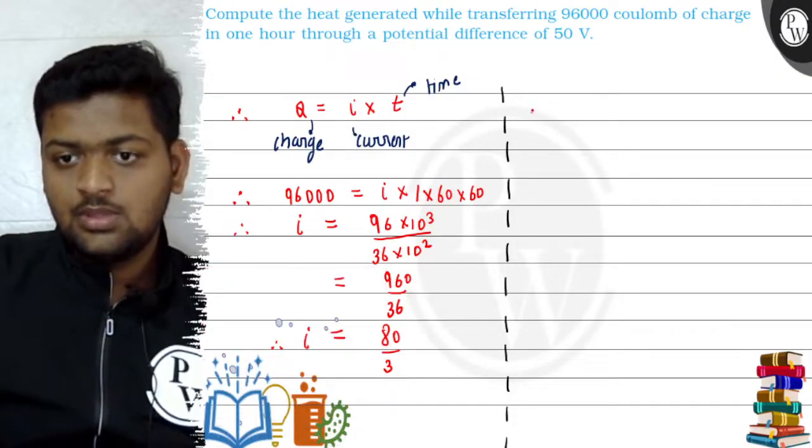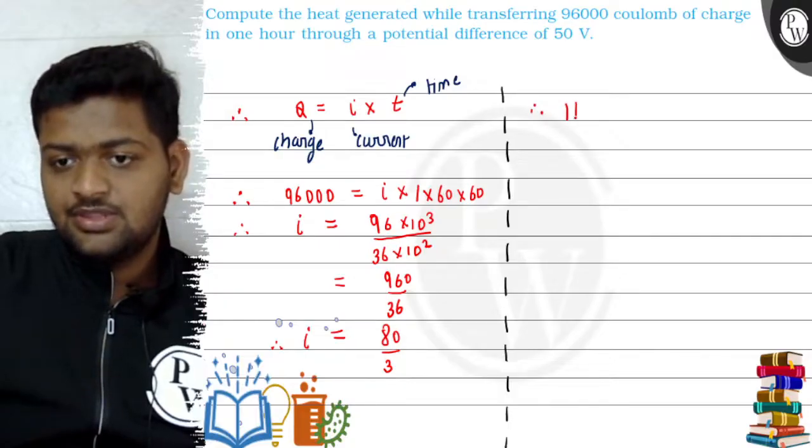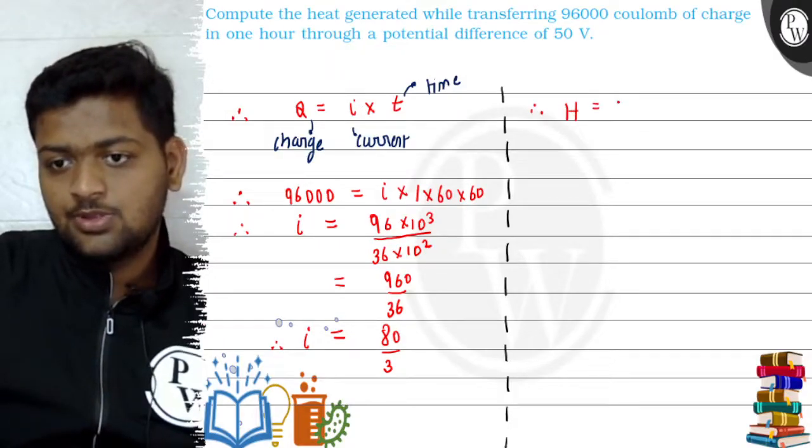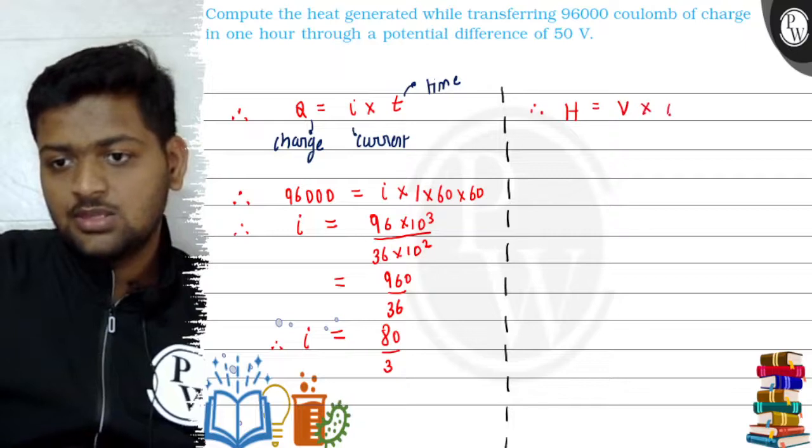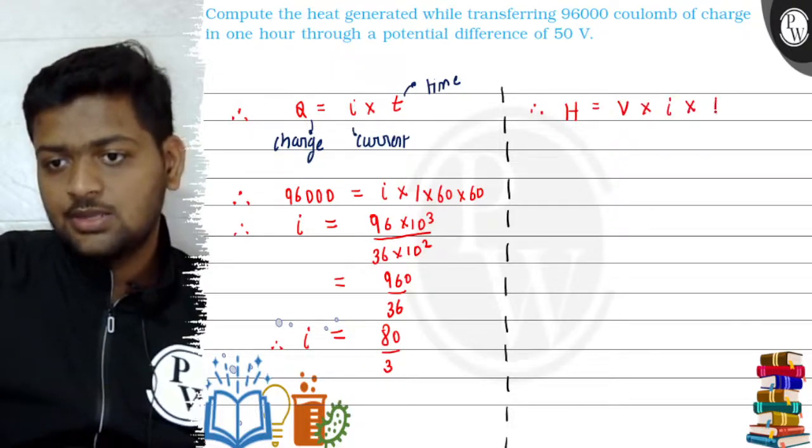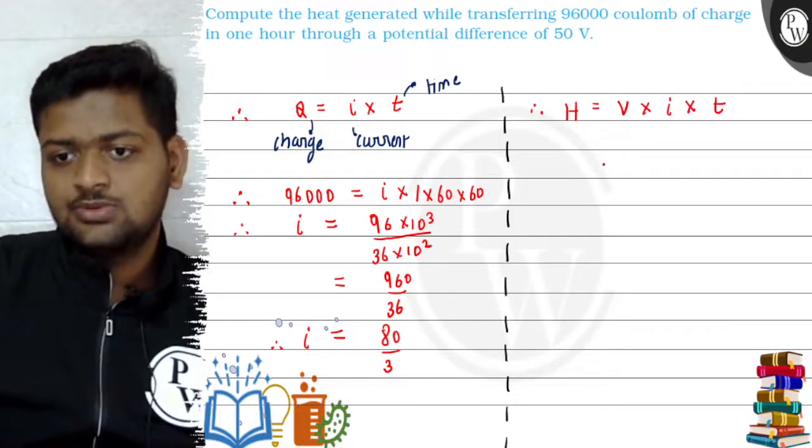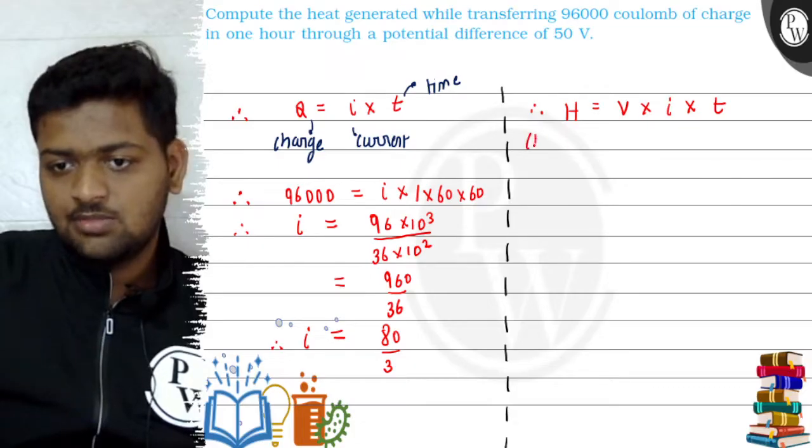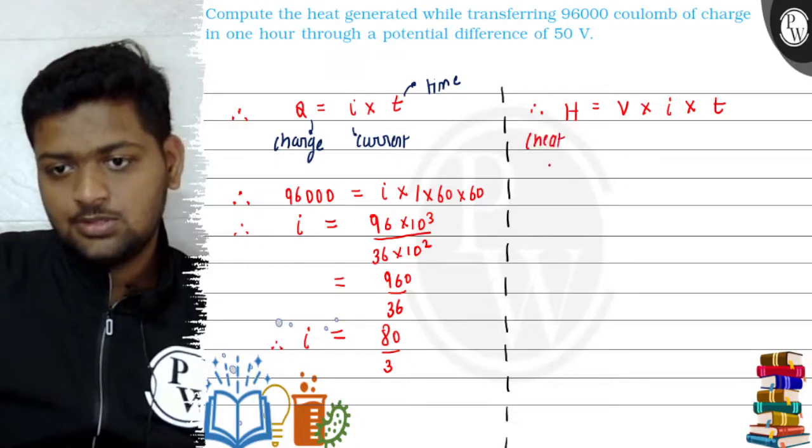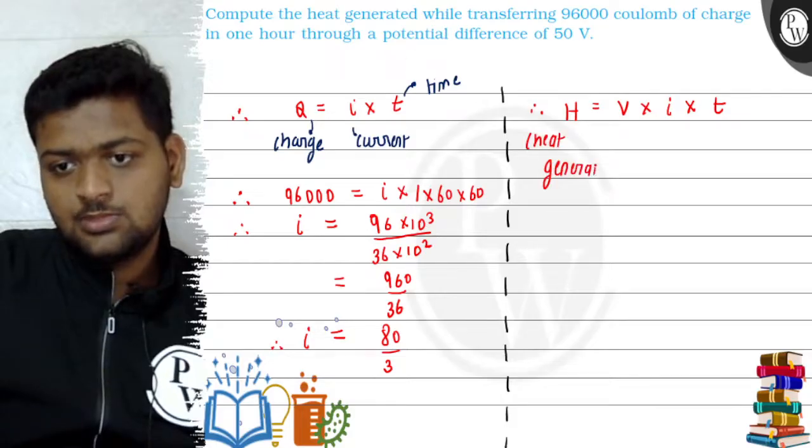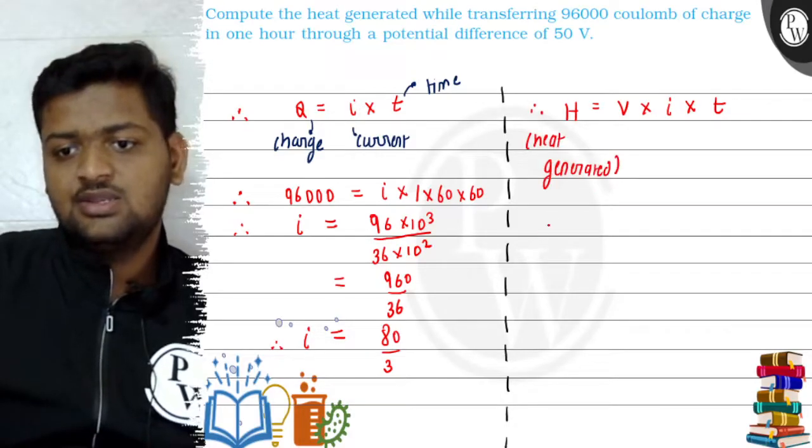Now, we will find heat generated. Heat generated H is equal to potential difference V into current I into time T. Okay, which is nothing but our heat generated. This is our formula to find heat generated.